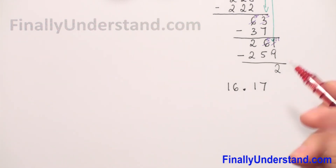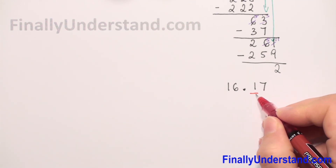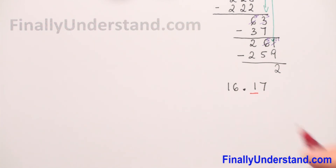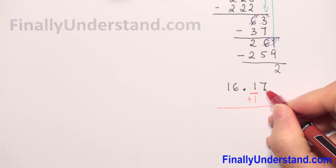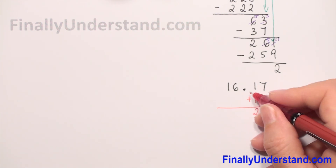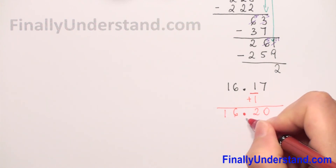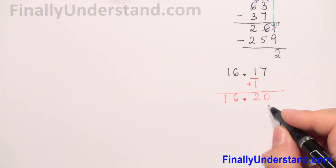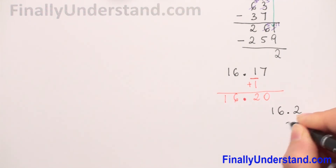We need to round to the nearest tenth, so we underline our tenths digit and check the digit after it, which is 7. Since 7 is greater than or equal to 5, we add 1 to our underlined digit. Every digit after the underlined digit becomes 0. So 1 plus 1 is 2, the decimal point stays in the same column, and our solution is 16.2. We don't write the trailing zero because it doesn't change the value.